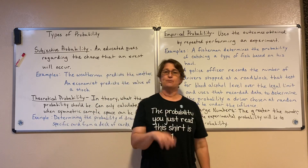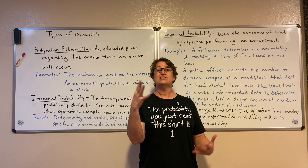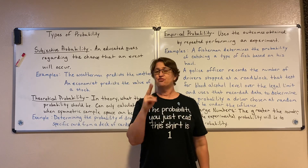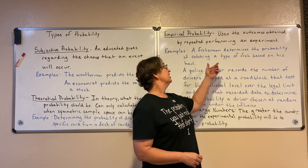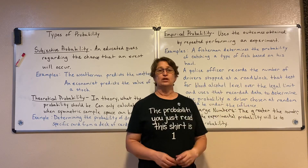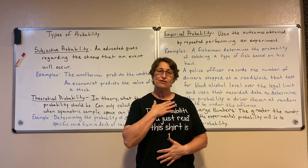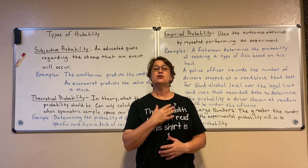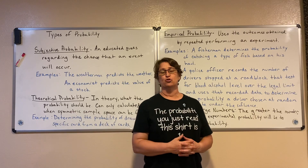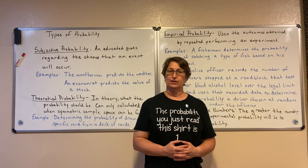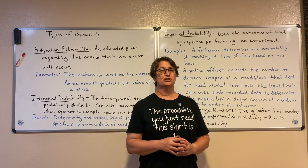So three different types of probability: subjective is an educated guess; theoretical is what should happen in theory; and empirical is after we've run an experiment — what does the collected data tell us? That's our empirical probability. Math Made Simple at Simpson Math — thanks for watching.